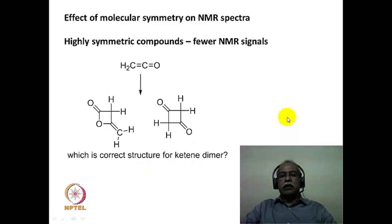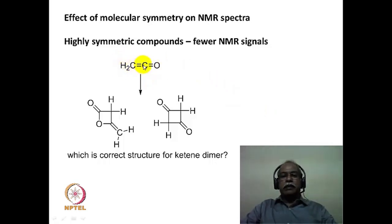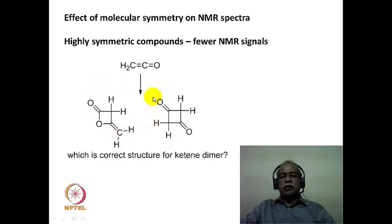The question here is: what does molecular symmetry do to the NMR spectrum? We have already seen in earlier examples that if the molecule is highly symmetrical in nature, then you get fewer signals in the NMR. The question posed here is: let us say ketene is undergoing dimerization. What is the structure of the dimer? Will it have a lactone structure or a diketone structure?